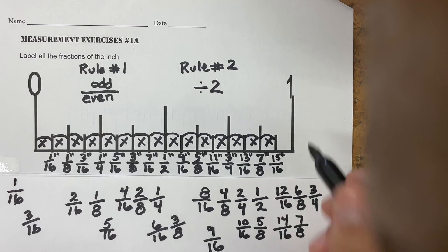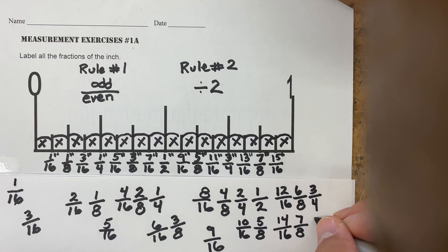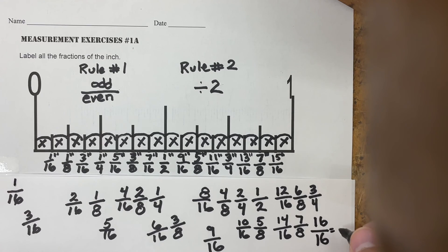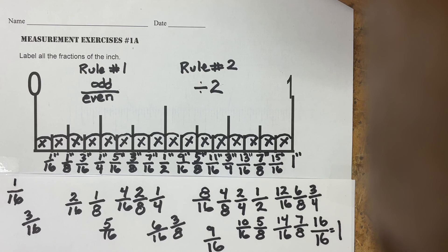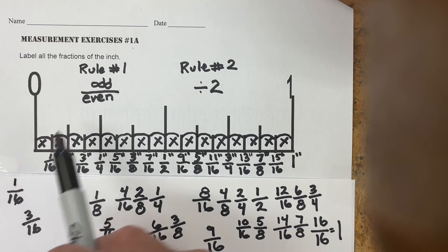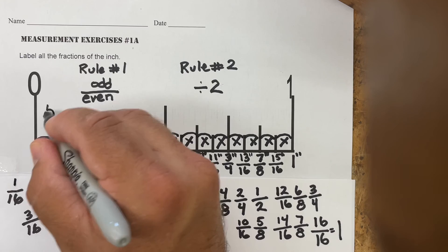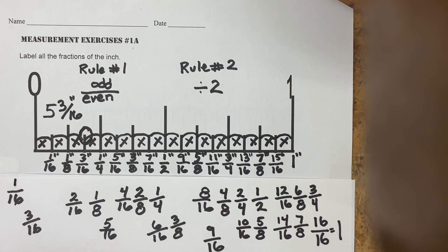The last one is sixteen sections out of a possible 16. Anytime a number is over itself, it equals a whole, or one — which is why this measurement is one inch. So that is measuring to the nearest one-sixteenth of an inch. The only other thing to keep in mind: don't forget the whole numbers you measure before you get to the increments. For example, if you measured five whole inches before this mark, your measurement would read five and three-sixteenths of an inch. Keep practicing, because practice makes perfect.